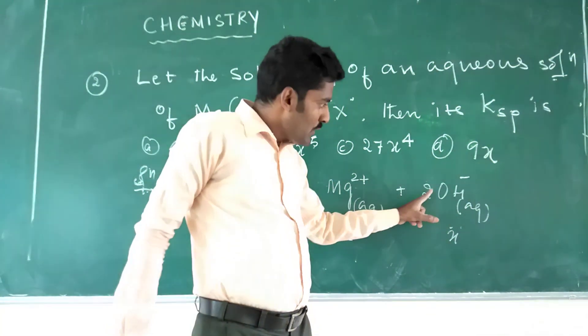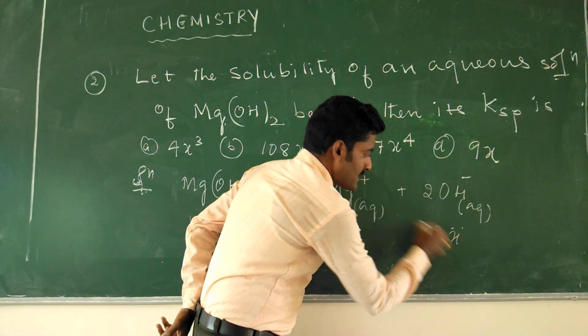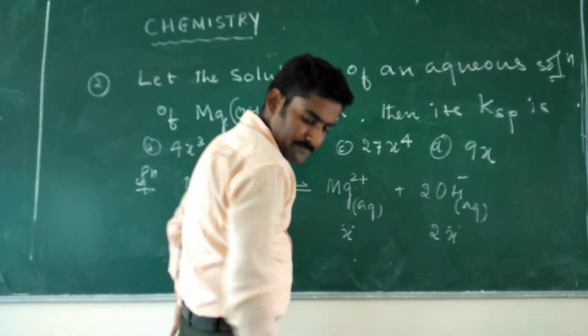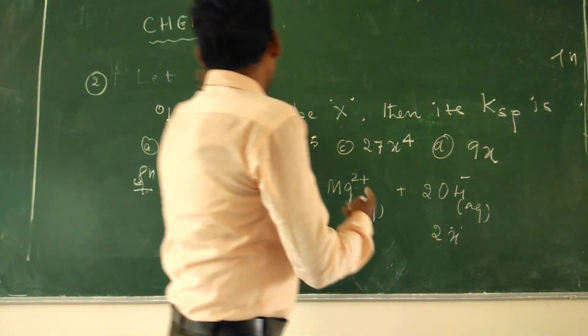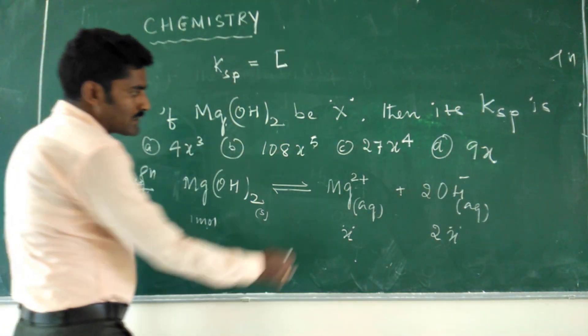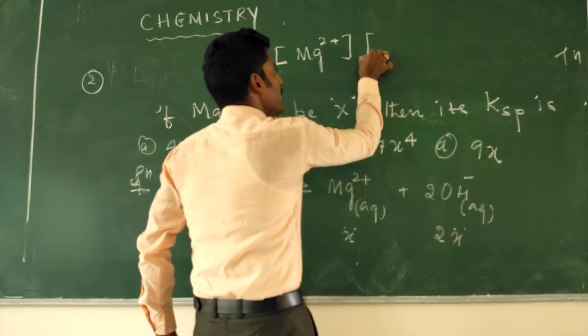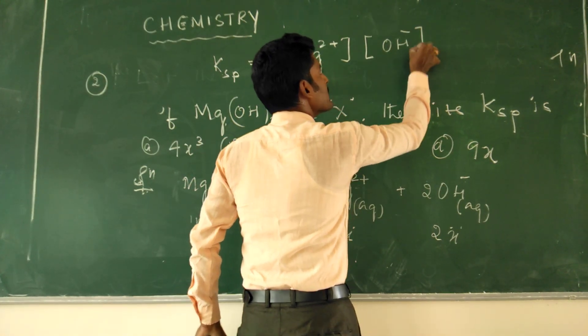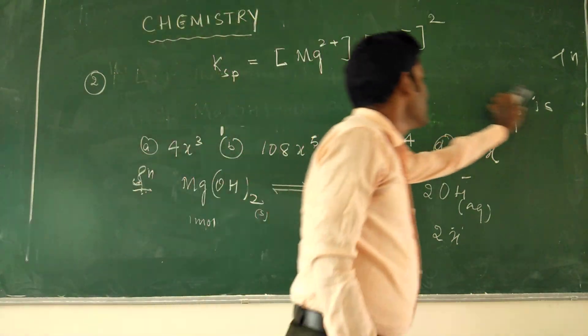So, we have in the solution two moles of hydroxyl ions, so that is 2X. So for this chemical equation, if we write KSP expression, solubility product expression, KSP is equal to molar concentration of Mg2+ into molar concentration of OH- power squared, because we have two moles of OH-.